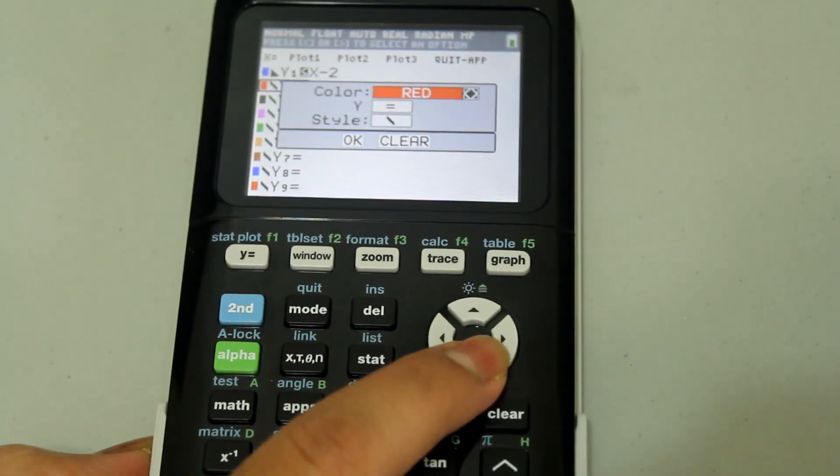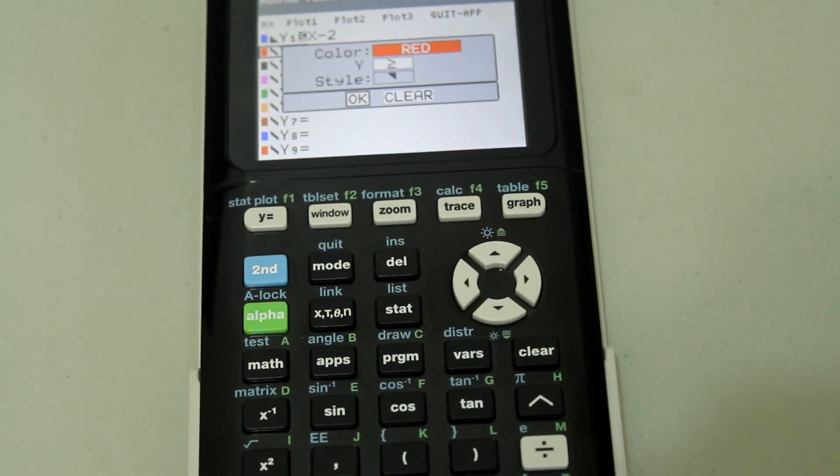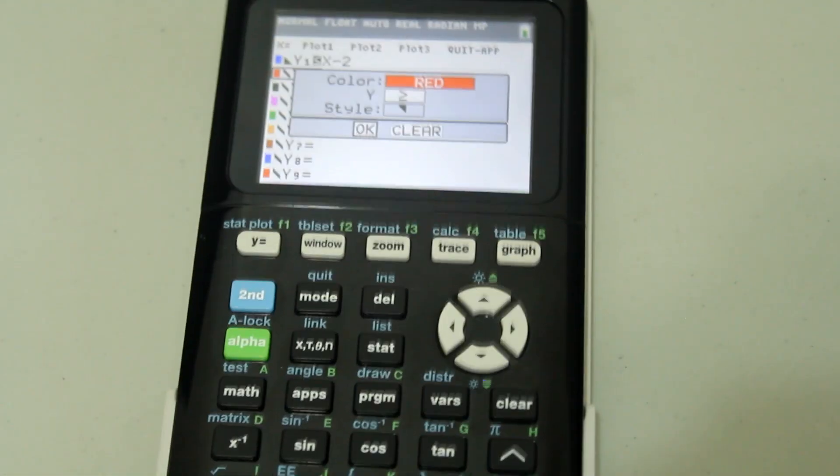This time, let's do greater than or equal to. Hit enter. Once OK has a black box around it, hit enter again.